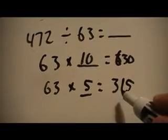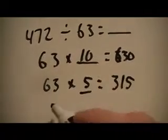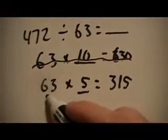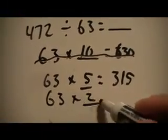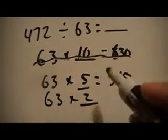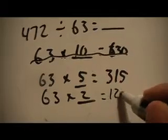So now I've got 63 times 5 is 315, I know I'm getting pretty close, so I'm going to get rid of this one for now. So maybe I'll try 63 times 2 because I like to double, so 60 doubled is 120, 3 doubled is 6, so that's going to get me 126.